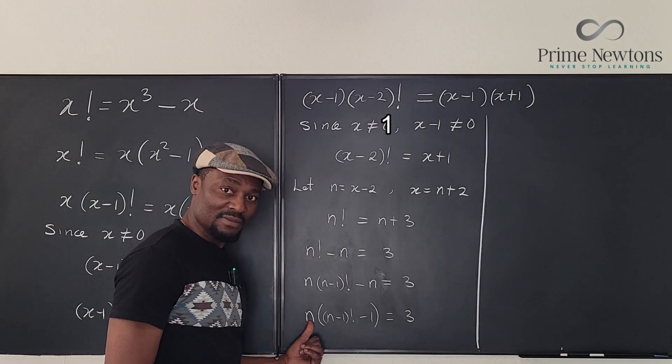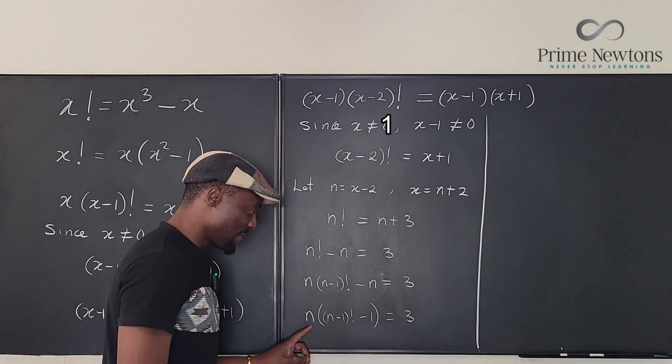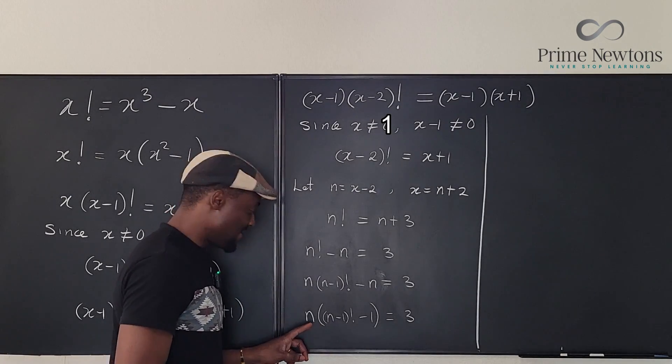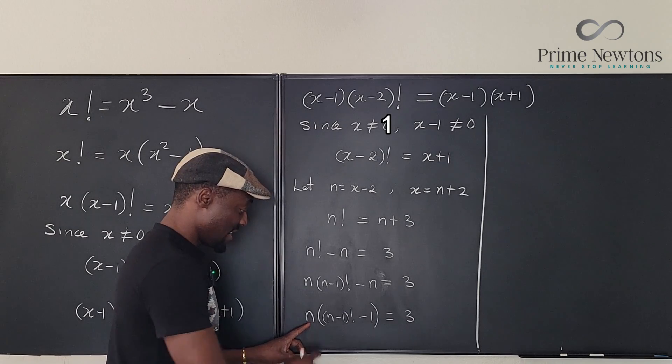So the first assumption we're going to make is that this one is 1. Let's assume this is 1. If this is 1, then this has to be 3. If n is 1, then this is 3.